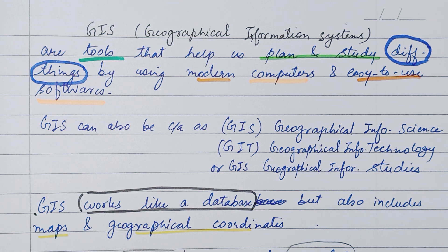We have already discussed the biotelemetry system, its applications, VHF and satellite telemetry, biologgers, hydrophones and their applications, non-invasive techniques in wildlife studies, remote sensing concept and its components, actual and passive remote sensing, types of remote sensing platforms, scanning system and remote sensing, working principle, advantages, limitations and applications of GPS.